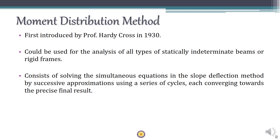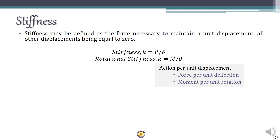Before learning about the moment distribution method you need to know some key terms. First is stiffness, which may be defined as the amount of action required to induce a particular displacement. It can be stated as force required to induce unit displacement, or moment required to induce unit rotation — that is, P/delta or M/theta, which is rotational stiffness.